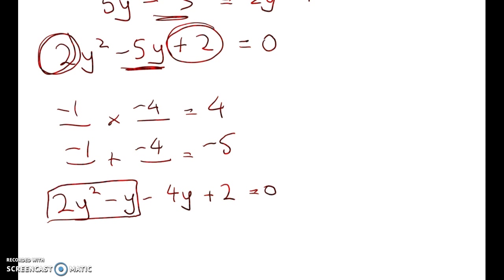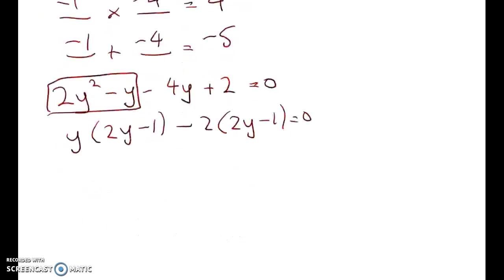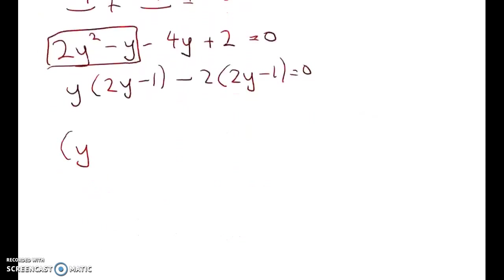Right, so factorising that gives me y into (2y minus 1) equals 0. Factorising that gives me (y minus 2) times (2y minus 1) is equal to 0. So y equals 2 or y equals a half.